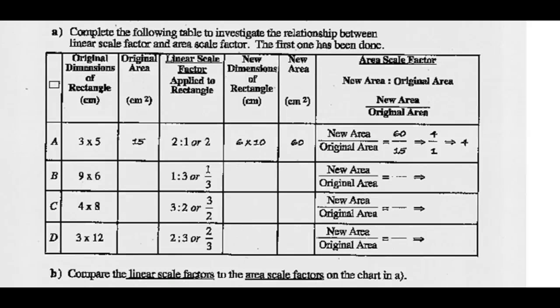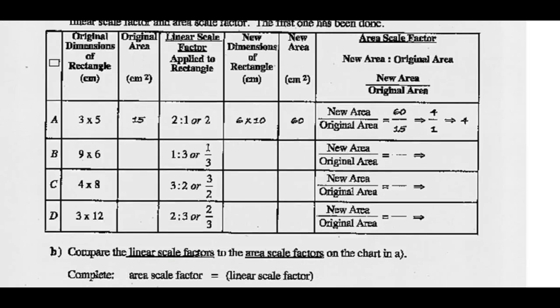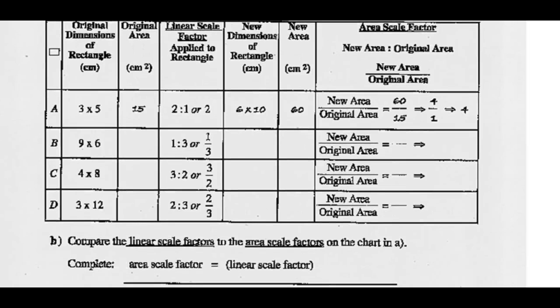Complete the following table to investigate this relationship. The first one has been done for us. The original dimensions of a rectangle are 3 by 5. The original area — remember, area of a rectangle is length times width — so 3 times 5 is 15 square centimeters.